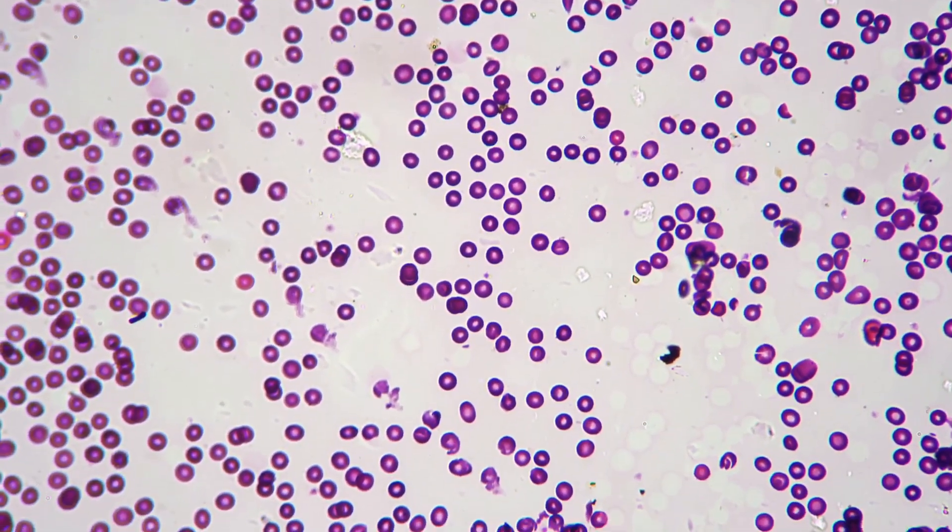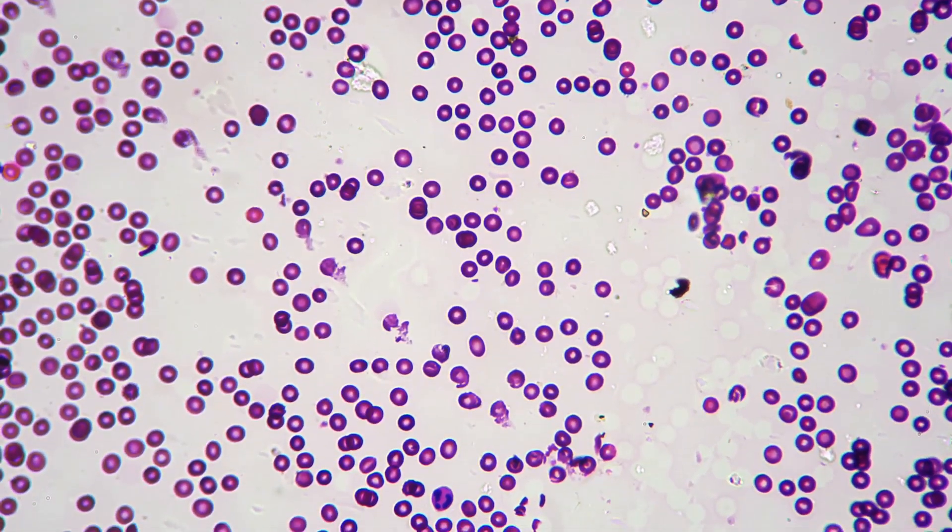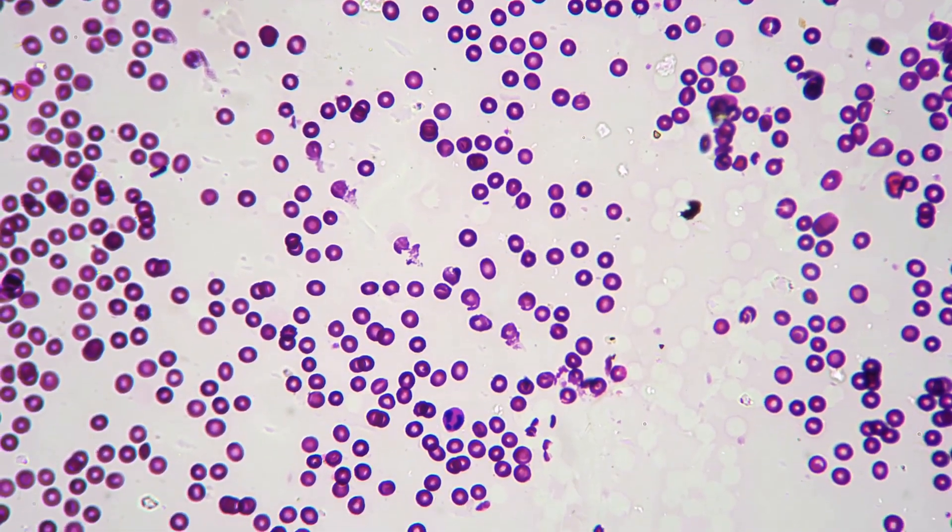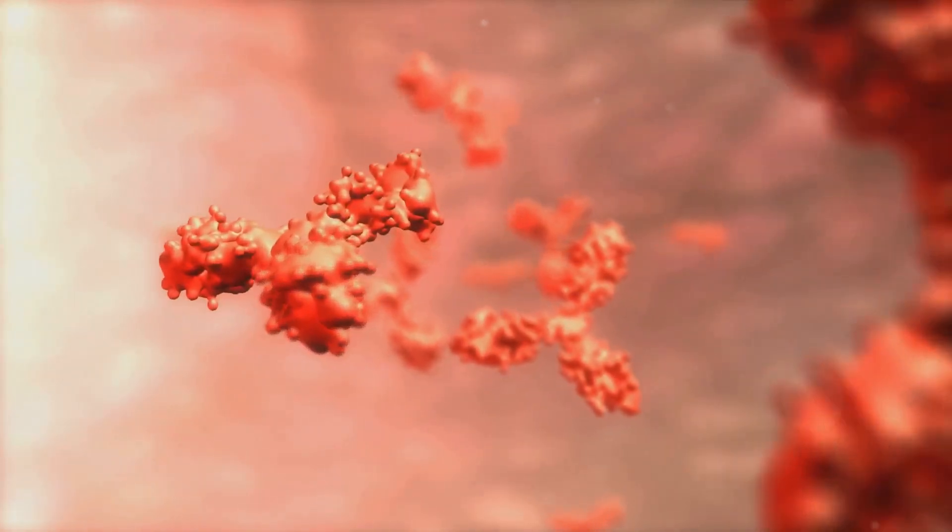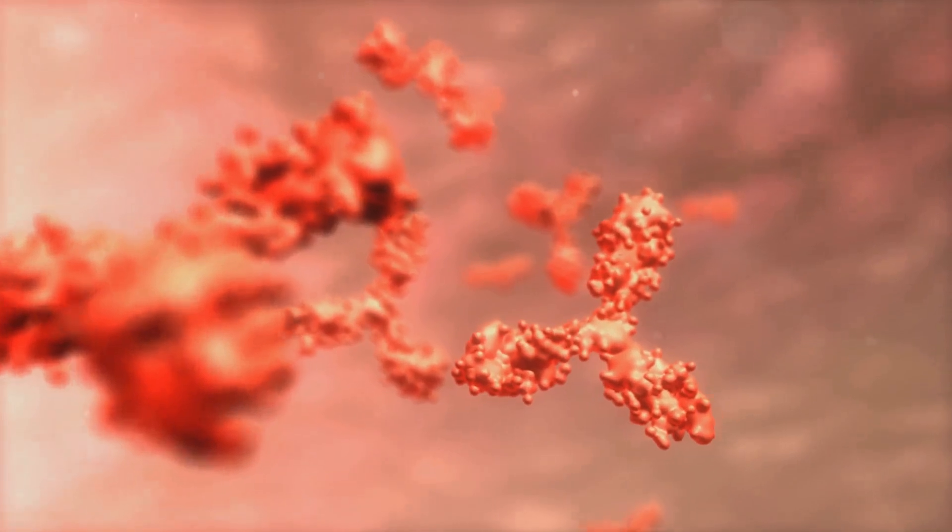Monocytes, the largest white blood cells, are the cleanup crew. They transform into macrophages, engulfing and digesting foreign substances and dead cells. These cells, though diverse in structure, each play a unique role in our immune system.